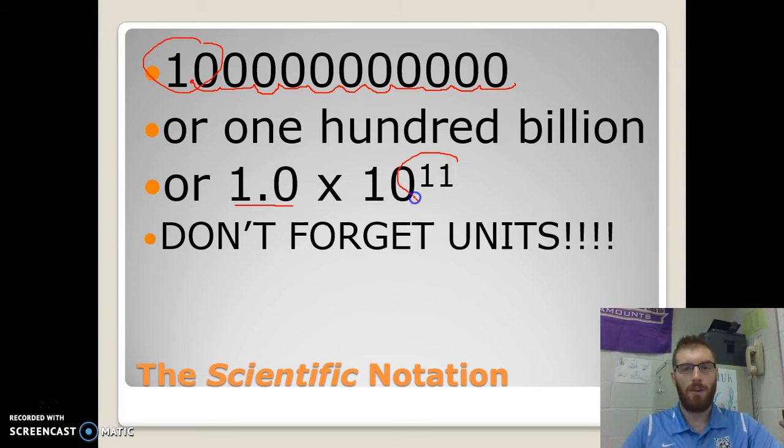Now, when you see a positive unit here, that means the decimal place was moved over to the left from the original number. So when moving back to the original number, you will move the decimal place to the right. So if it's positive, decimal goes to the right.